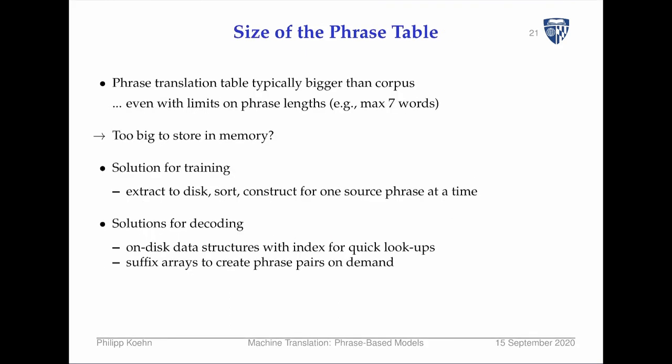Phrase tables are typically bigger than the corpus. You already saw from a single sentence pair you get a lot of phrases. Even if you put limits on phrase length — say maximum seven words or five words — it becomes too big to store in memory. So you have to do all kinds of tricks.